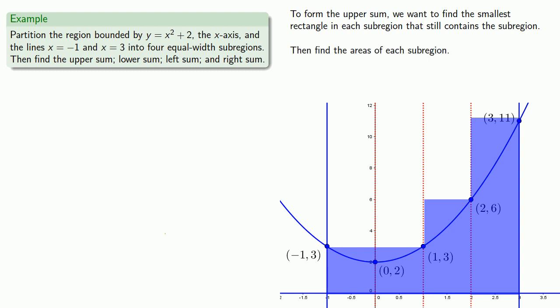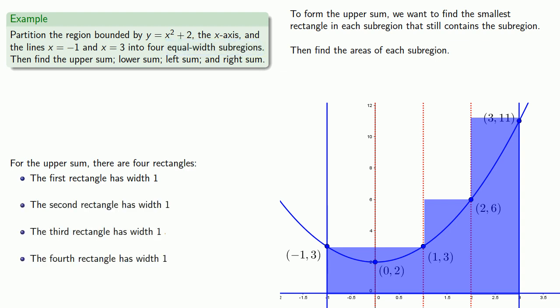Now we want to find the area of each of these rectangles. For the upper sum, there are going to be four rectangles, and to find the area of any rectangle, we need to know its width and height. The first rectangle has width 1, and since we made all of these regions equal in width, all of these rectangles are going to have width 1. For the first rectangle, the bottom is on the x-axis, and the top runs through the point negative 1, 3. So the height is going to be 3, and the area of that first rectangle is 3.